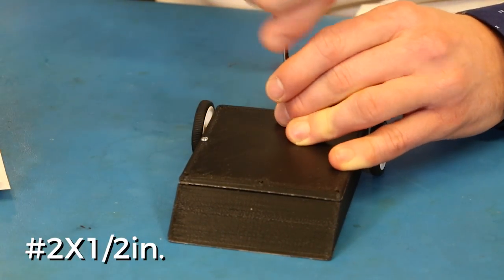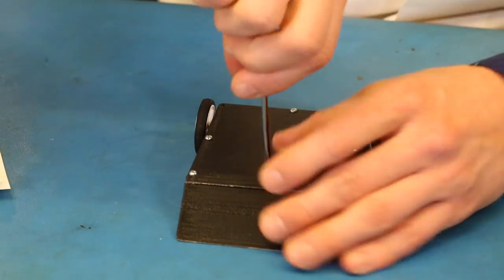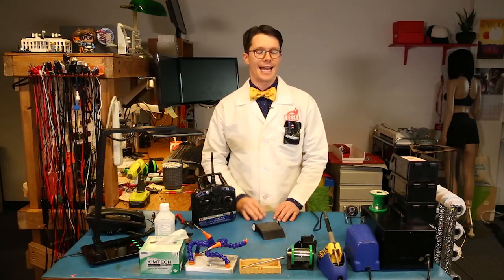You can use M2.2 screws if you want to keep everything metric. Remember to skip the back corner holes since we sanded those down. Just remember that you'll need to pull the battery out to turn it off since we didn't add a switch.